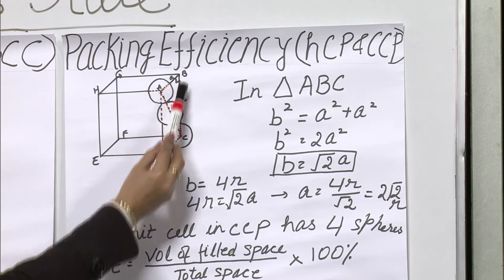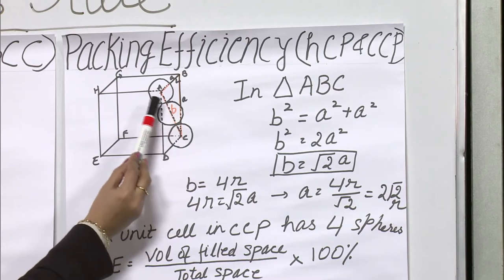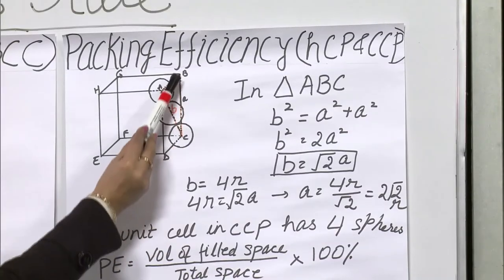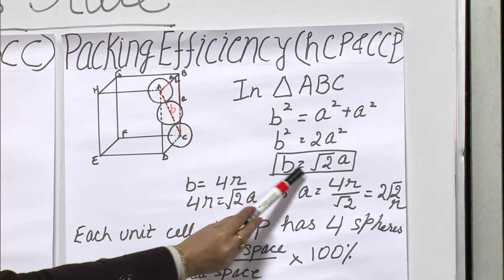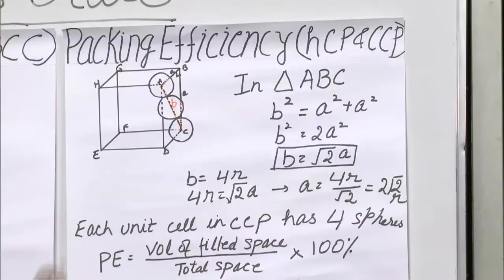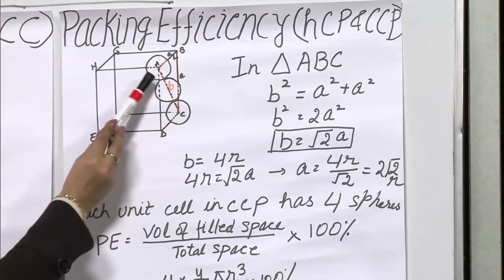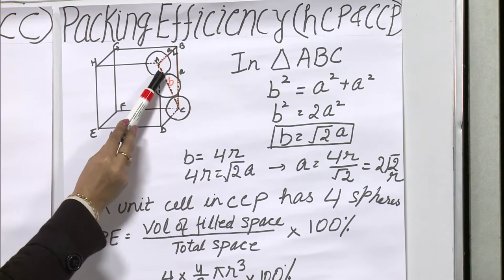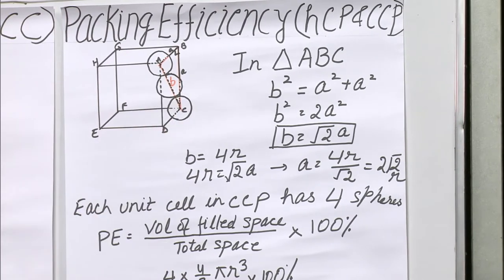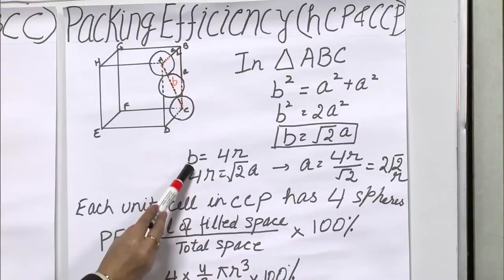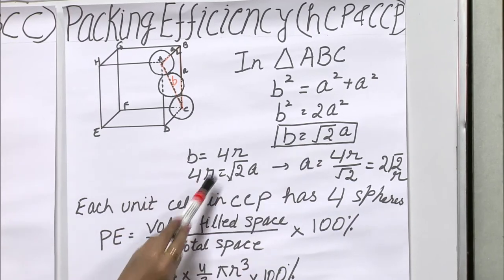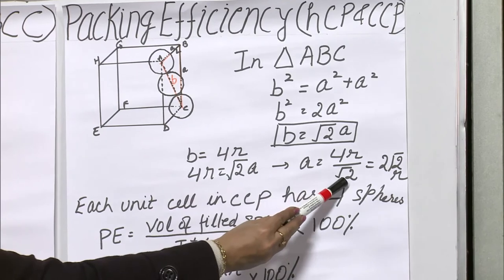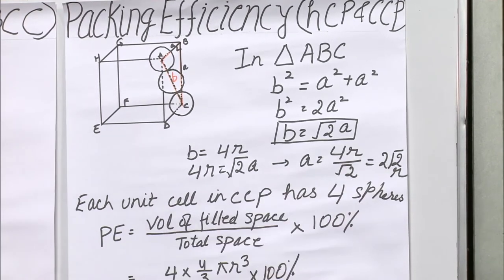Let us take triangle ABC on the face of the cube. Since all angles are 90°, the face diagonal B is the hypotenuse. By the Pythagorean theorem, B² = A² + A², so B = √2·A. Now B also equals 4R, because along the face diagonal there is 1R at one corner atom, a full diameter 2R for the face-center atom, and 1R at the opposite corner atom — totaling 4R. Therefore 4R = √2·A, which gives A = 4R/√2 = 2√2·R.